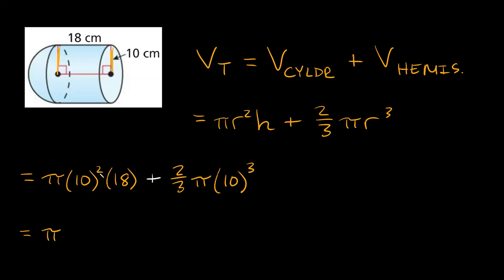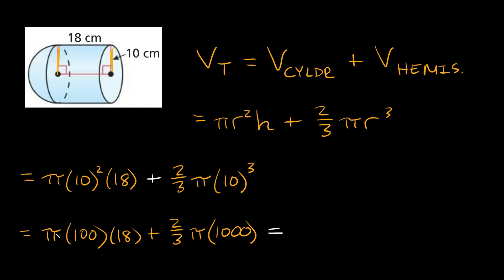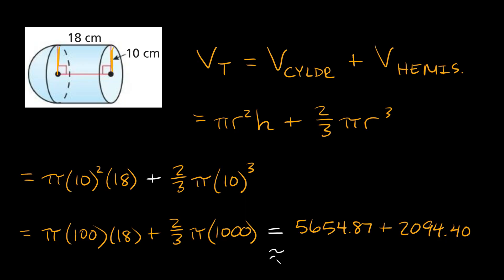Simplifying: pi times 10 squared is 100, so we get 100 times 18, plus two-thirds times pi times 10 cubed which is 1000. Pi times 100 times 18 equals approximately 5654.87, and two-thirds times pi times 1000 equals approximately 2094.4. Adding those together gives a total volume of about 7749.26.